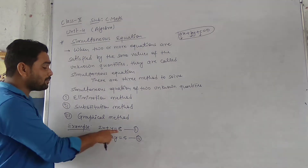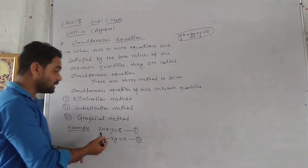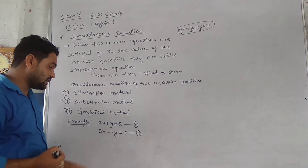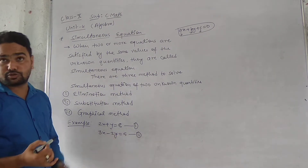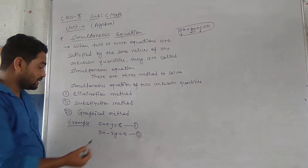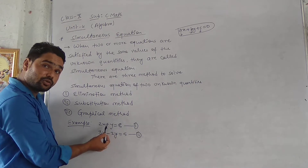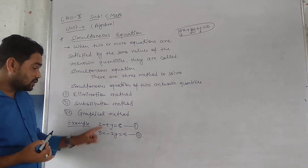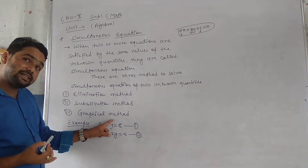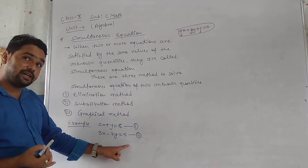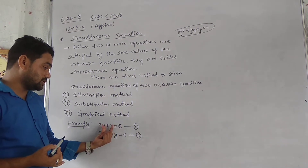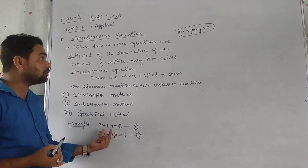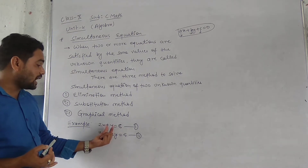And one example I have written here. Look: 2x plus y equals to 8, and 3x minus 2y equals to 5. X and Y are the unknown quantities — two unknown quantities — and two equations are given here. Now we are going to solve this and find the values of x and y.